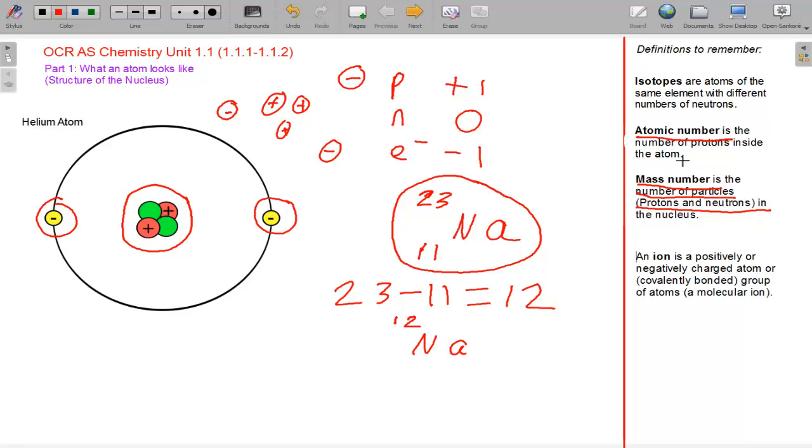You should take away the four definitions. Isotopes are atoms of the same element with different numbers of neutrons. Atomic number is the number of protons inside the atom. Mass number is the number of particles, protons and neutrons combined, in a nucleus. And an ion is a positively or negatively charged atom or covalently bonded group of atoms, a molecular ion. I will talk quickly about molecular ions.